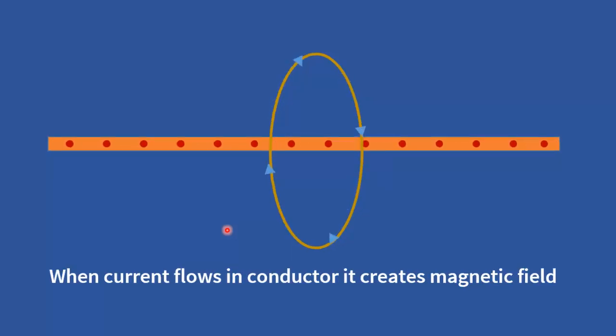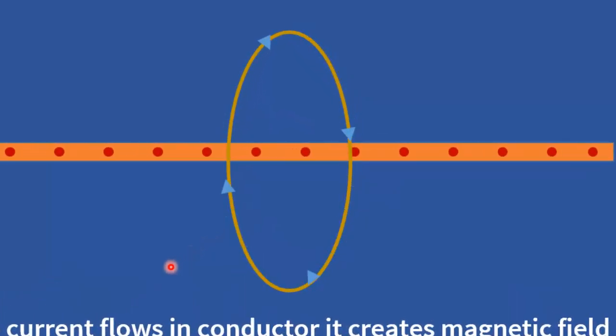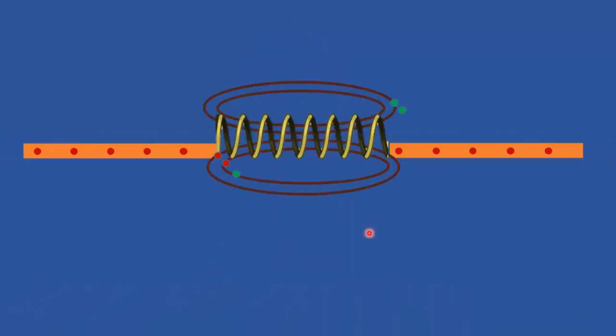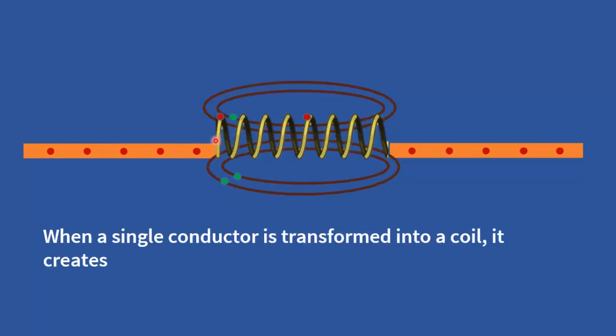In the case of a straight conductor, the magnetic field forms concentric circles around the wire. When the conductor is coiled into an inductor, the magnetic fields from each loop combine, resulting in a stronger overall magnetic field. Also coiling the conductor increases its inductance, allowing it to store more energy in the magnetic field for a given current.